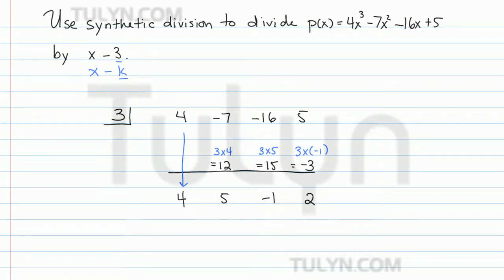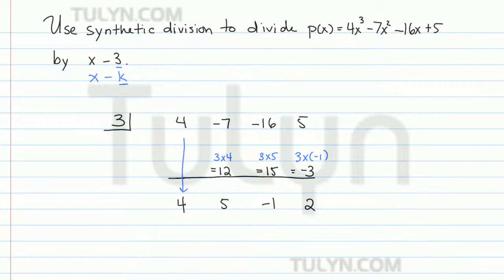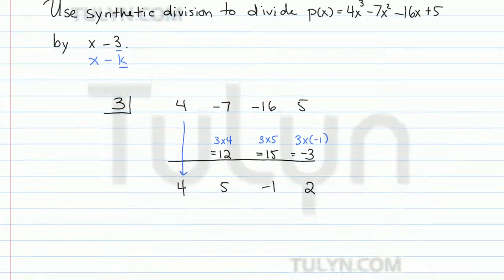Now, in order to figure out what value of the exponents the x's are going to take for each of these coefficients, we have to think about what we've got. We've got a polynomial in degree 3 being divided by a polynomial in degree 1, so the polynomial that's going to result is going to be in degree 2.